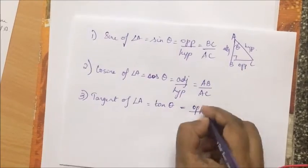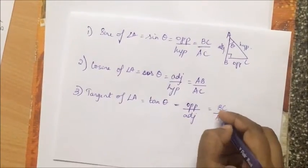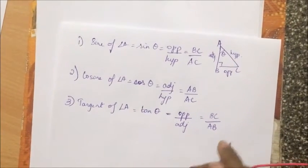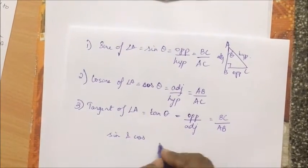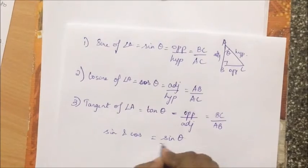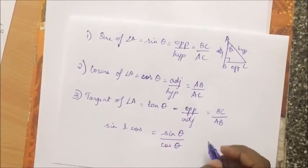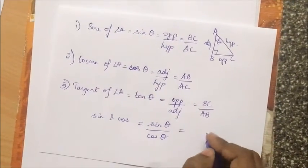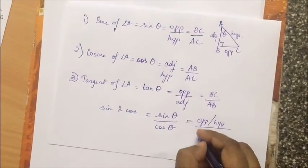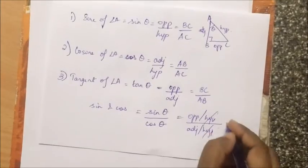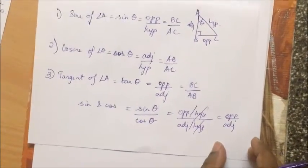That is the side opposite by the side adjacent, which is BC by AB. Now tan theta can be written in terms of sine and cos, which is sine theta over cos theta. This obviously, if we expand, we end up with opposite divided by hypotenuse over adjacent by hypotenuse.